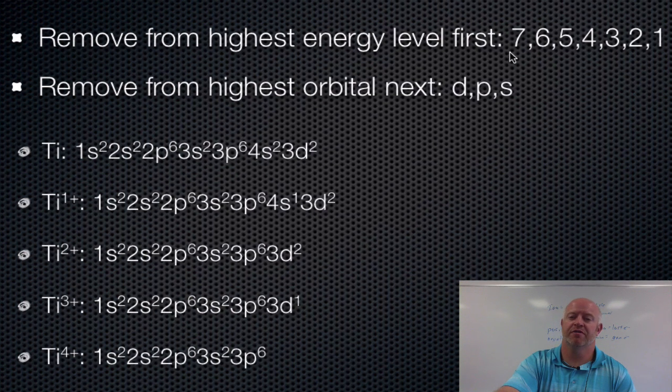So when we're dealing with positive ions and how they work, we're going to use titanium as our example here. So here's your rules. You remove from the highest energy level first. What that means is that you take electrons away from the seventh energy level before you touch any in the sixth. Six before five, five before four, three, two, one, and down the line.